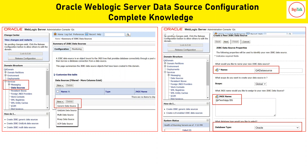After clicking New, the first input you have to provide is the name of your data source, which you can define according to the business application you are going to configure. There are no restrictions on that — you can use any name. The second field is scope, which you can set to the default, which is global.